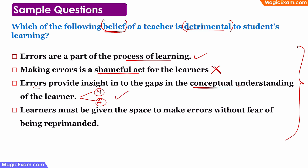Option four — learners must be given space to make errors without fear of being reprimanded — is a correct statement. Whenever we are learning something, we will make some errors, so learners should have the space and independence to do so. If you discourage learners from making any errors or give them no space, you are actually stopping them from learning new things. Therefore, only one statement is incorrect — making errors is a shameful act for learners — and the answer is option two.